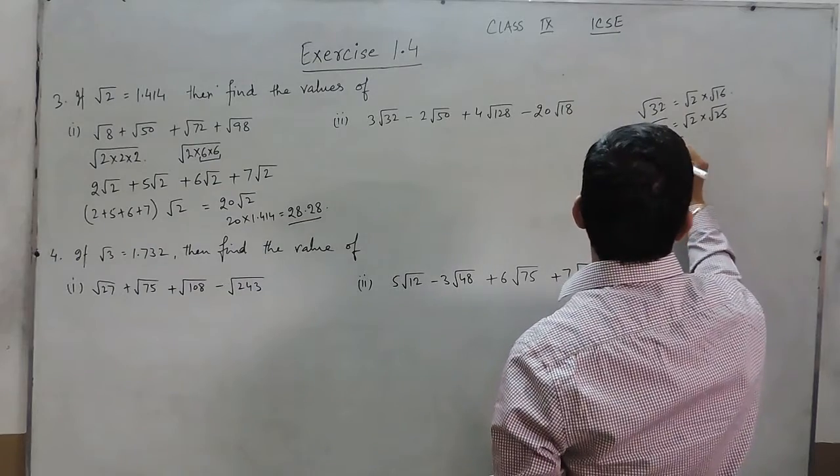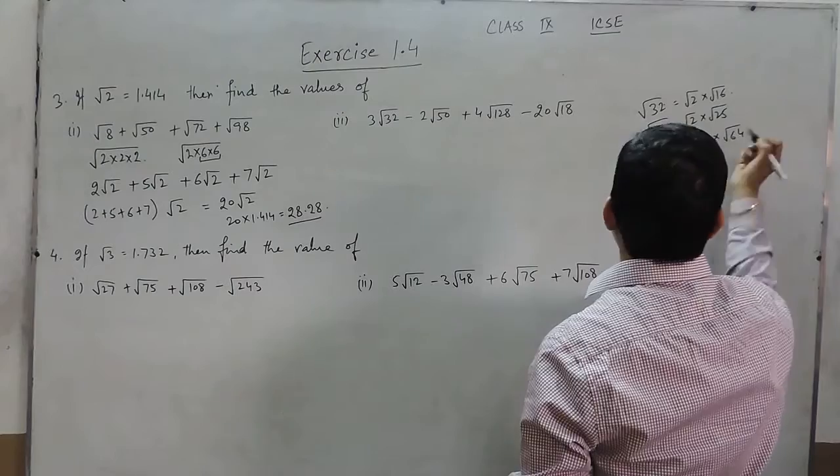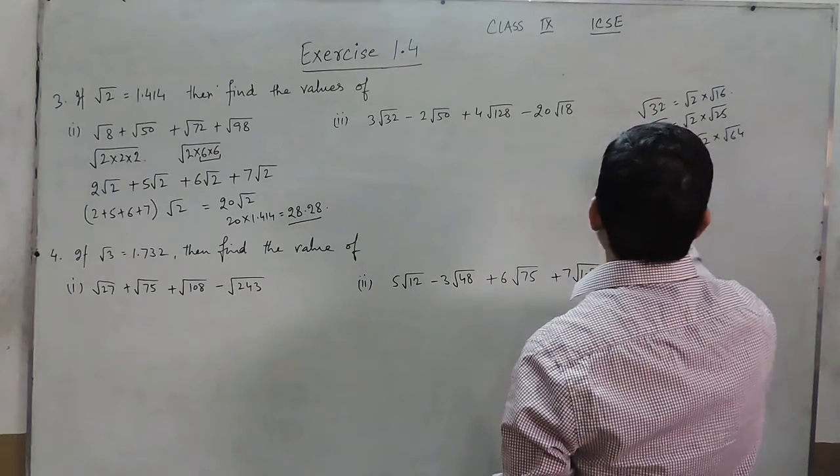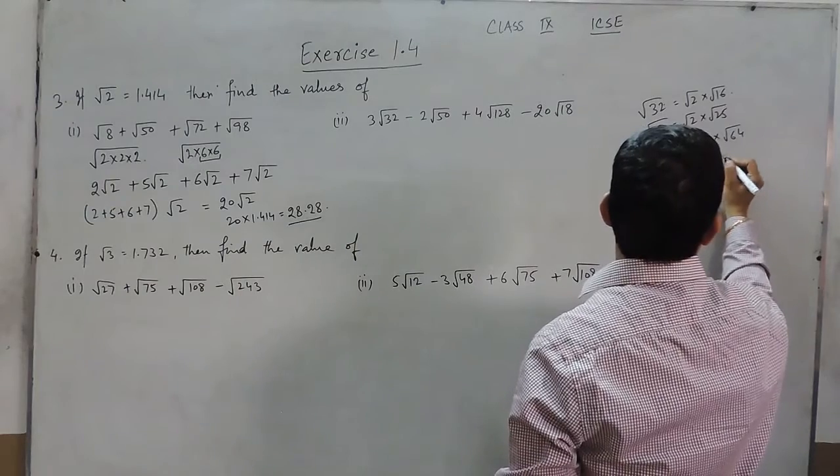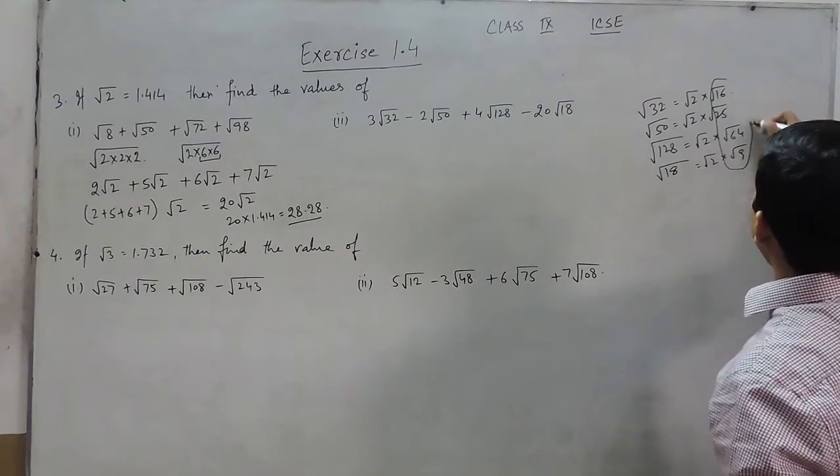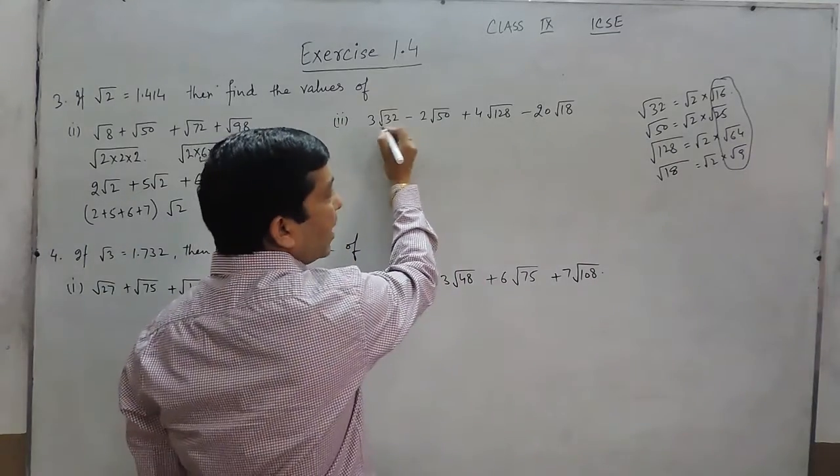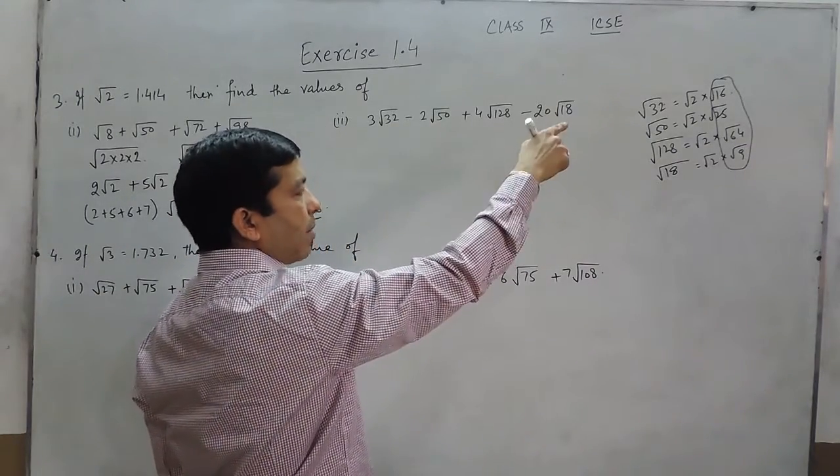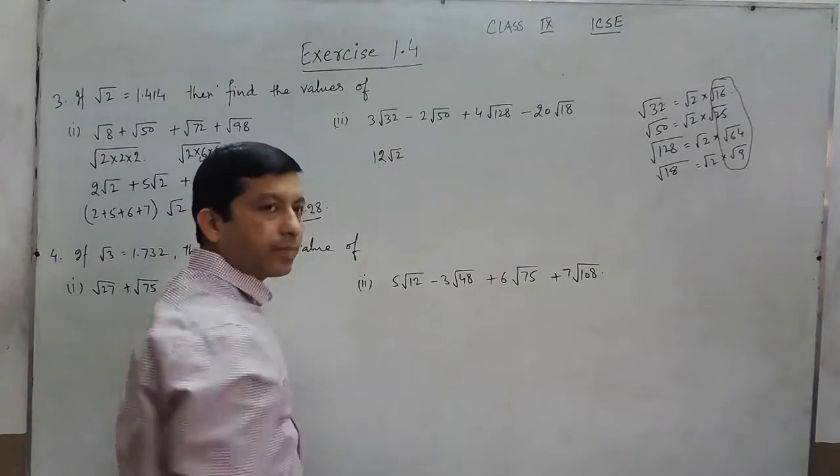Same way, √128 can be written as √2 × √64. While √18 can be written as √2 × √9. We know all these are perfect squares which can be solved. So this is 3 × 4 × √2, which can be written as 12√2.